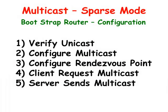These are the steps we are going to use to configure multicast using a bootstrap router. One, we are going to verify that the unicast network is working correctly. Two, we are going to configure the router for sparse mode multicasting. Three, we will configure the rendezvous point and the bootstrap router. Four, we are going to have a client computer request multicast traffic. And five, we are going to have the multicast server send out multicast traffic.